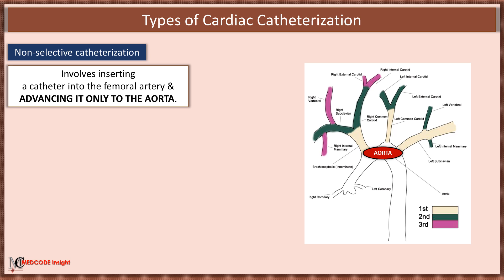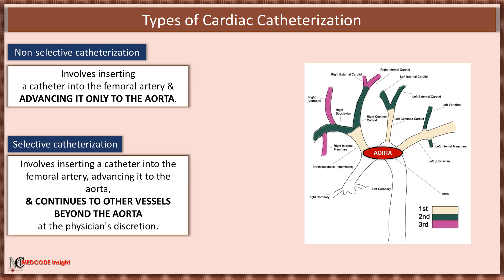There are two types of cardiac catheterization: non-selective and selective. Non-selective catheterization involves inserting a catheter into the femoral artery and advancing it only to the aorta. Selective catheterization involves inserting a catheter into the femoral artery, advancing it to the aorta, and continuing to other vessels beyond the aorta at the physician's discretion.